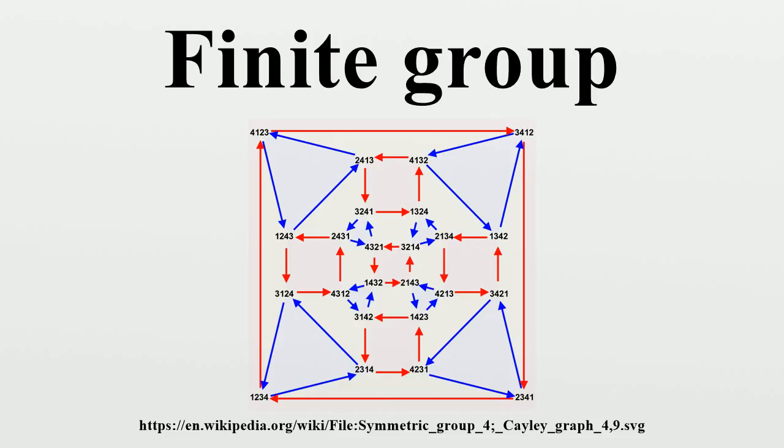For every positive integer n, most groups of order n are solvable. To see this for any particular order is usually not difficult, but the proof of this for all orders uses the classification of finite simple groups. For any positive integer n, there are at most two simple groups of order n, and there are infinitely many positive integers n for which there are two non-isomorphic simple groups of order n.